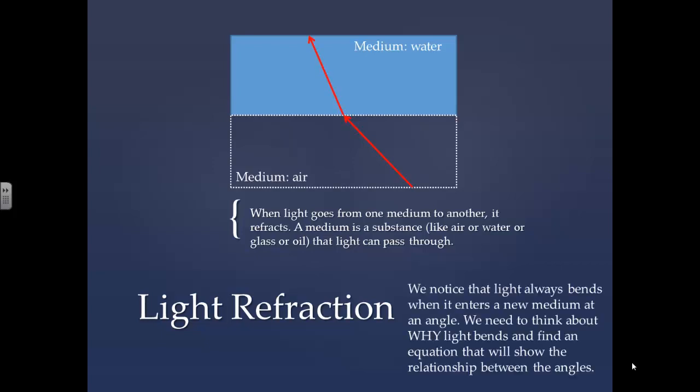We notice that light always bends when it enters a new medium at an angle. We need to think about why light bends and find an equation that will show the relationship between the angles.